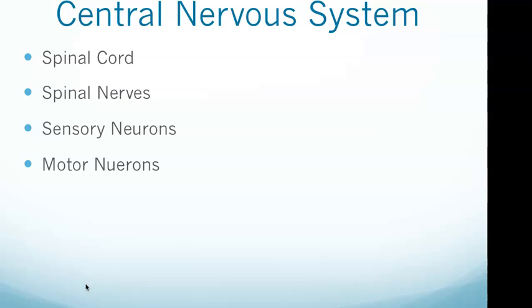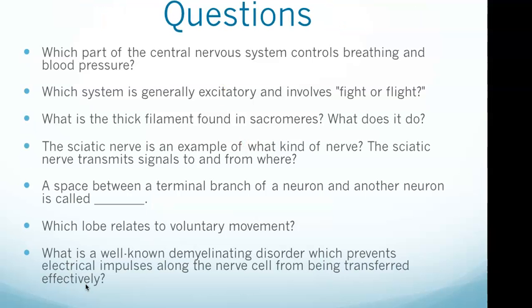The spinal cord sends nerve impulses from the extremities of the body to the brain. Spinal nerves carry signals between the spinal column and the body. The sciatic nerve is an example of a spinal nerve that transmits signals to and from the leg and lower back — that was question four.